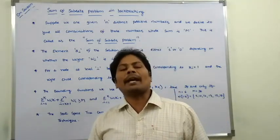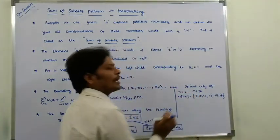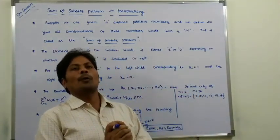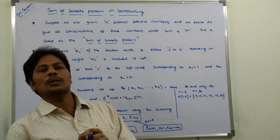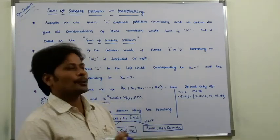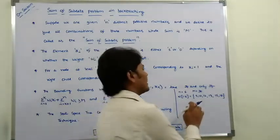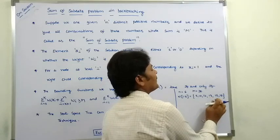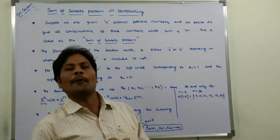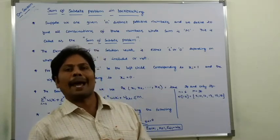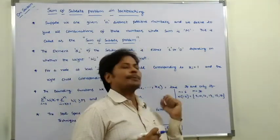This problem can be explained with the following example. Suppose n is equal to 6, meaning we are given 6 positive numbers. These positive numbers are called weights, represented by weight vector w of 1 to 6, that is 5, 10, 12, 13, 15, 18. We have to find out all combinations of these numbers whose sum is capital M, where M is equal to 30.